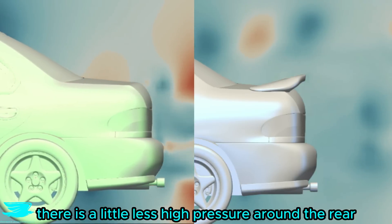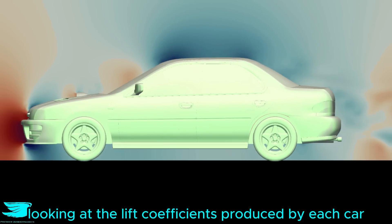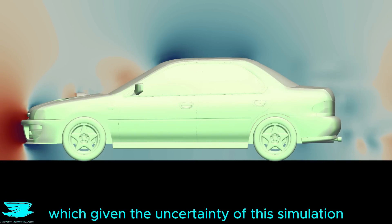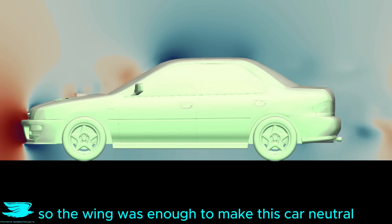Looking at the pressure plot, there is a little less high pressure around the rear, but it is marginal. And in fact, looking at the lift coefficients produced by each car, the one with the wing had a lift coefficient of just 0.01, which given the uncertainty of this simulation is pretty much zero. Without the rear wing, the lift coefficient was 0.05, so the wing was enough to make this car neutral.